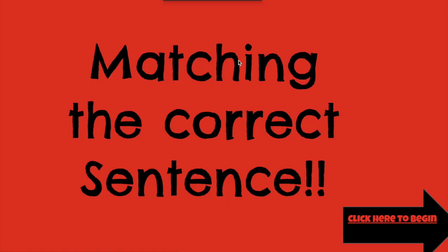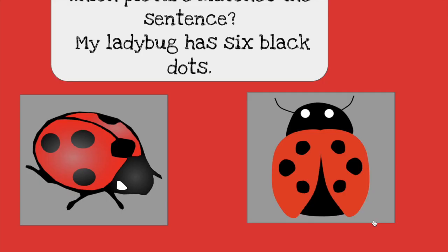In present mode, my first screen says 'Matching the Correct Sentence.' When I click down here where it says 'Click here to begin,' my slide automatically goes to the next slide. When I get to that slide it says 'Which picture matches the sentence?' and it says 'My ladybug has six black dots.' So if I was presenting this to my students, they would read the sentence and then click on one of these images.